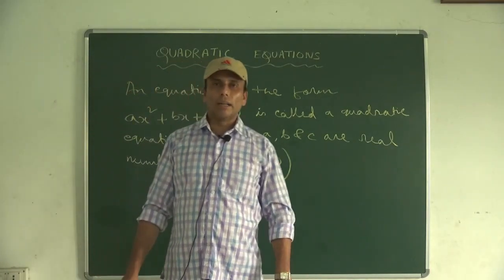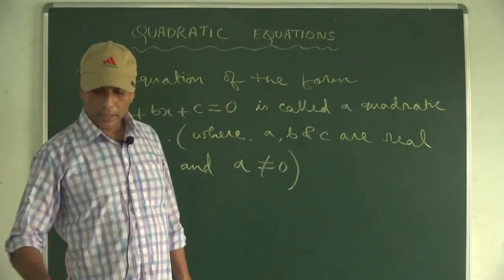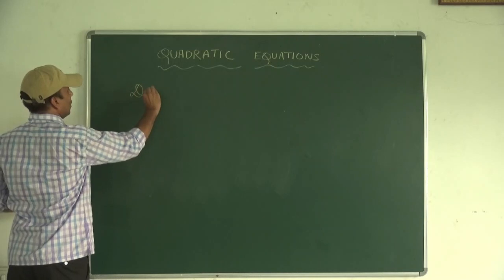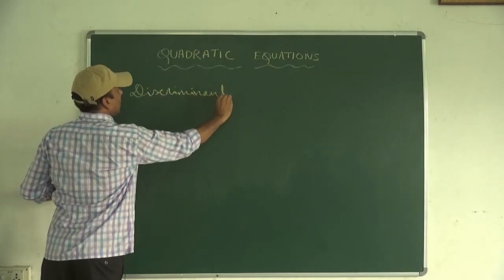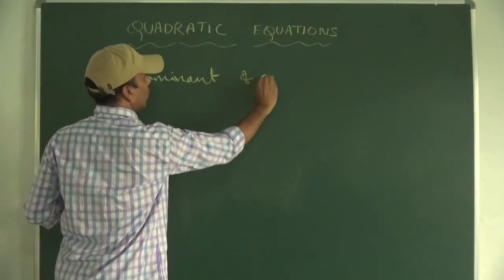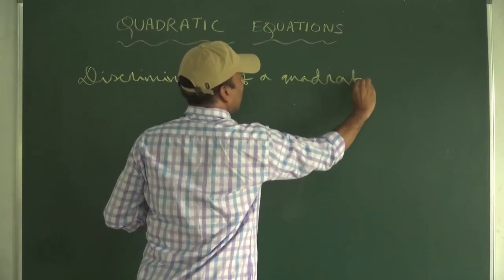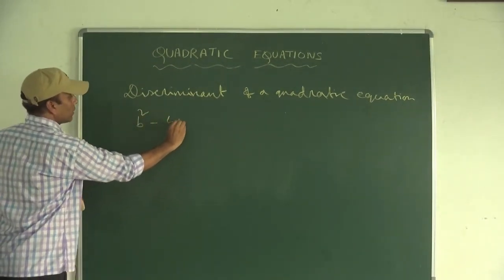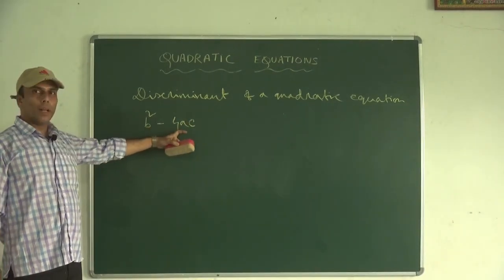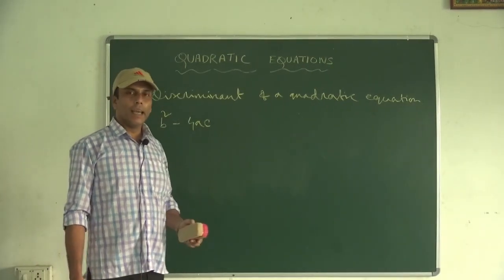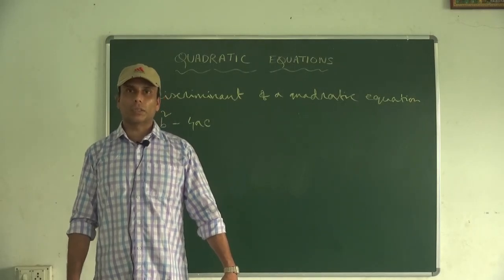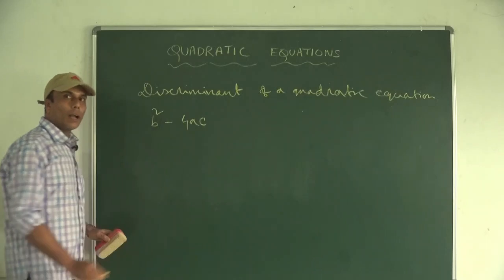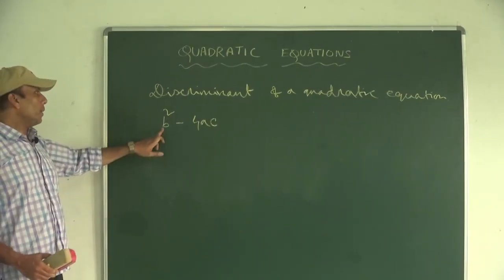Now we will discuss about the discriminant of a quadratic equation. The discriminant is B² - 4AC. It is called the discriminant of a quadratic equation, and this value B² - 4AC decides about the nature of the roots. If the equation is Ax² + Bx + C = 0, then B² - 4AC will decide what will be the nature of the roots.